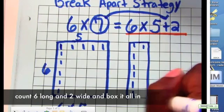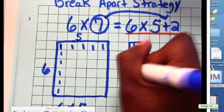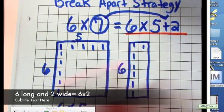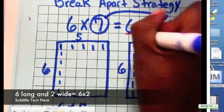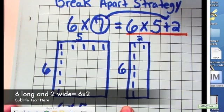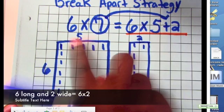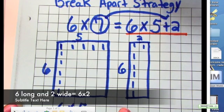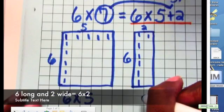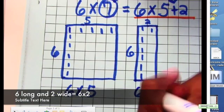And now I'm going to box all of this in. This side remains six, just like this side. But then I have the two here. And I can see where I have the five and the two that broke apart. And five and two equals the seven. Now here I will have six times two.